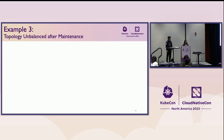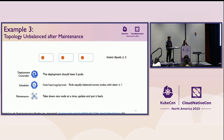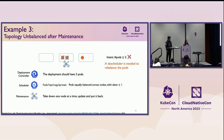The last example is caused by interactions between controllers and events. There are three nodes, the deployment has three pods, and the scheduler simply tries to evenly balance pods across nodes. A maintenance team wants to take down one node at a time, update it, and put it back. They think this is safe because the intent is more or equal to two replicas — with three pods, you can safely take down one node. However, the maintenance takes down the first node, the pod gets evicted and rescheduled to another node. After the node comes back, the pod won't be rescheduled because the scheduler doesn't do that. When the next node goes down, both pods get evicted and the intent is violated. A descheduler is really needed to rebalance pods after the node comes back.